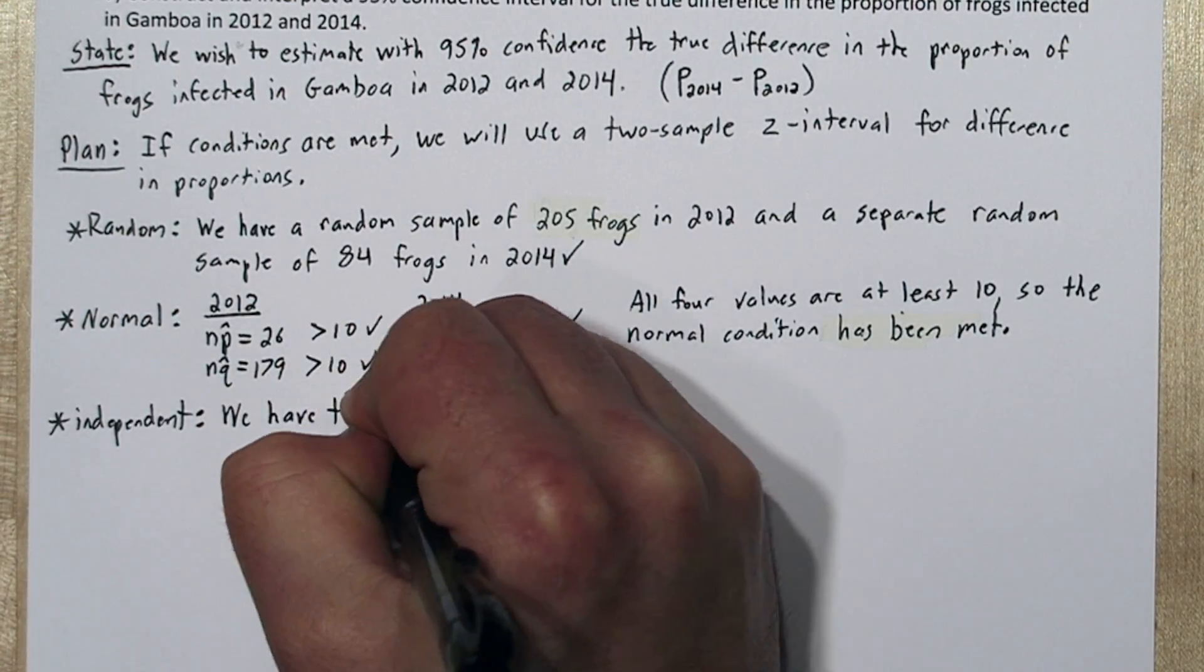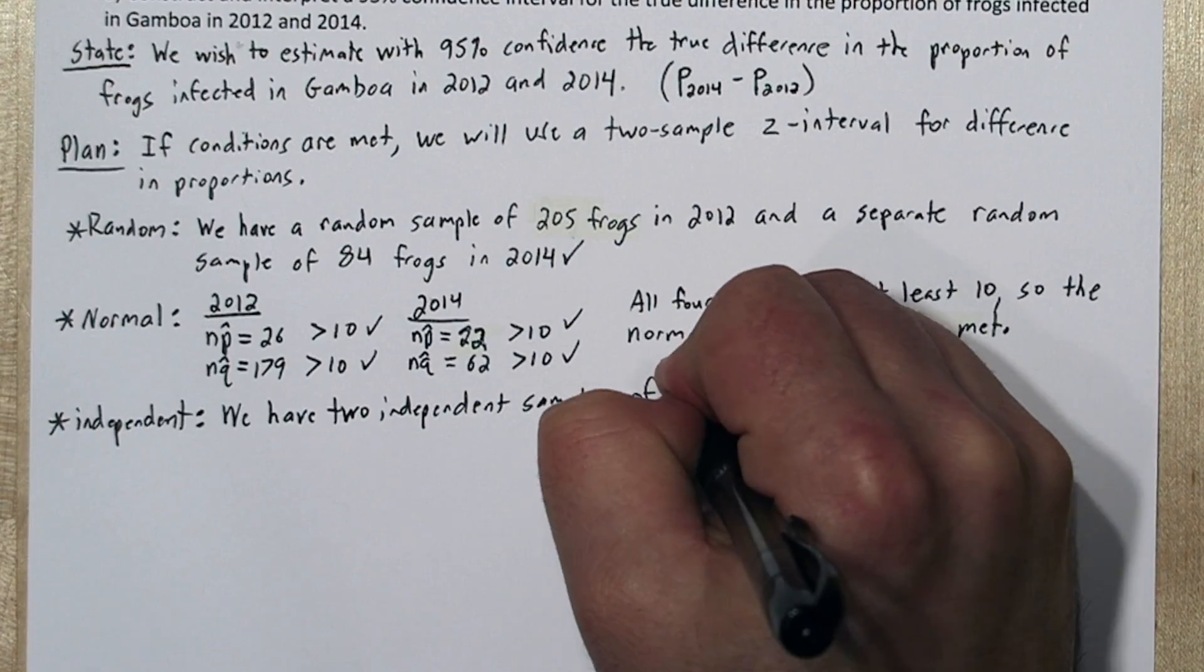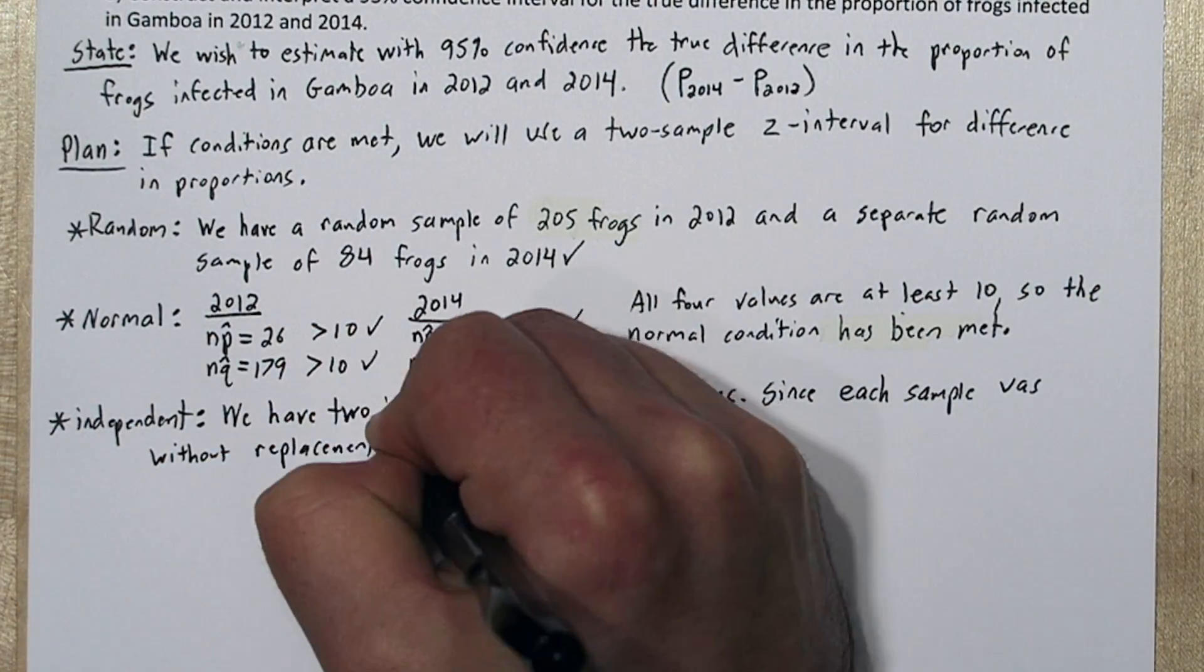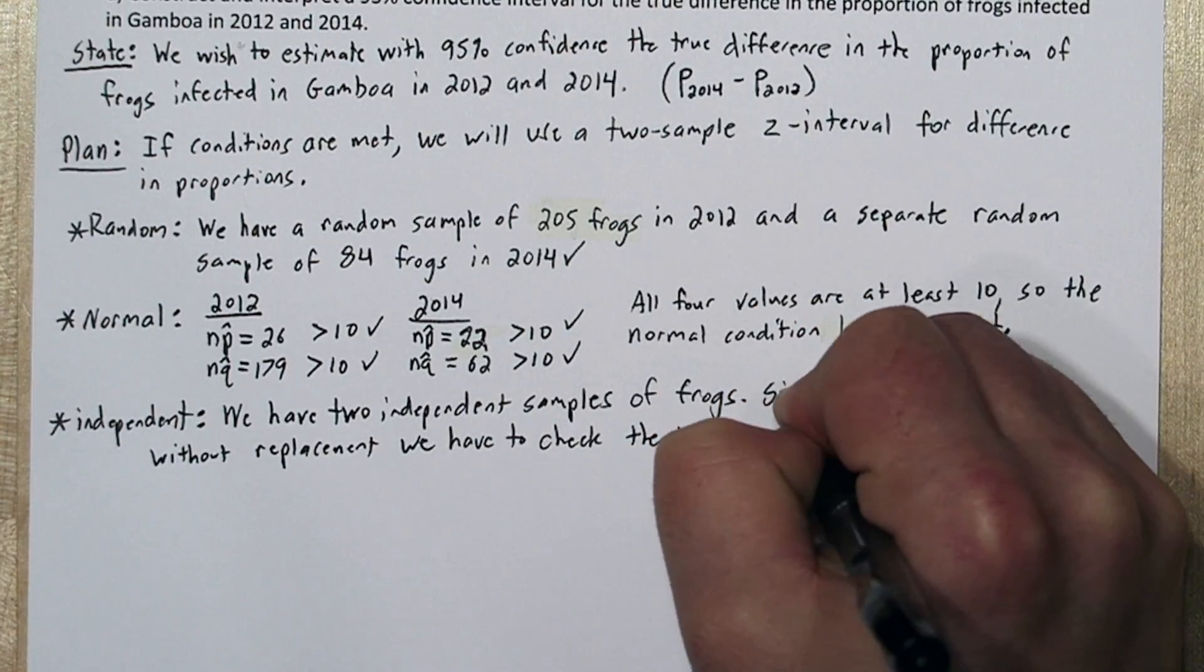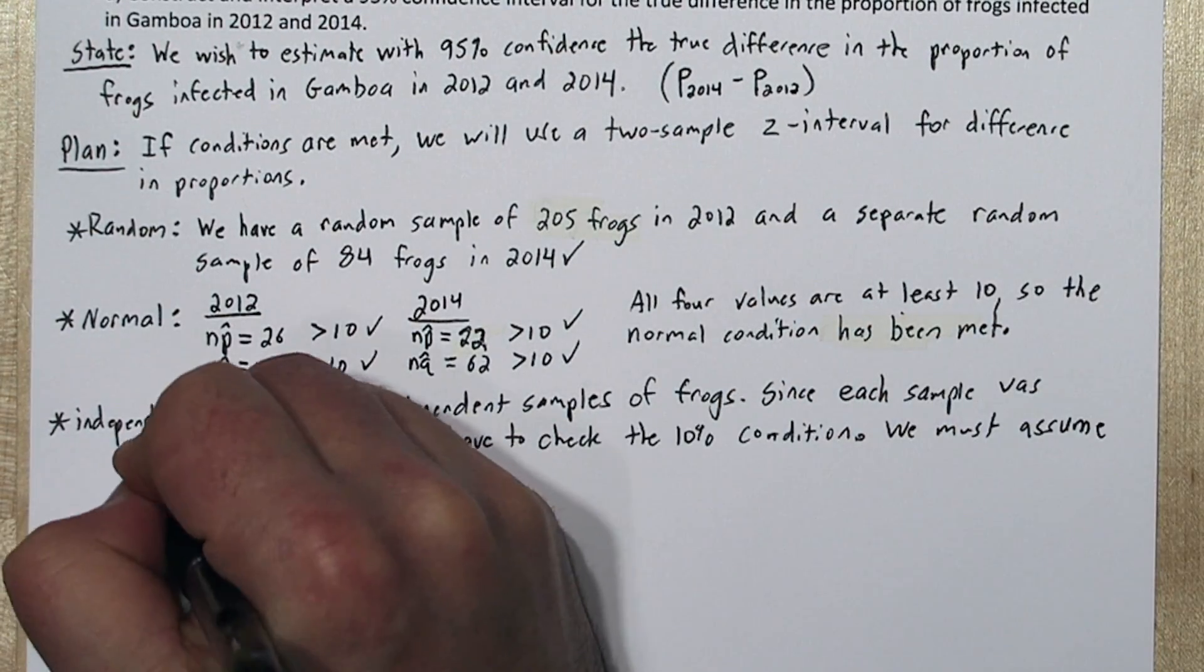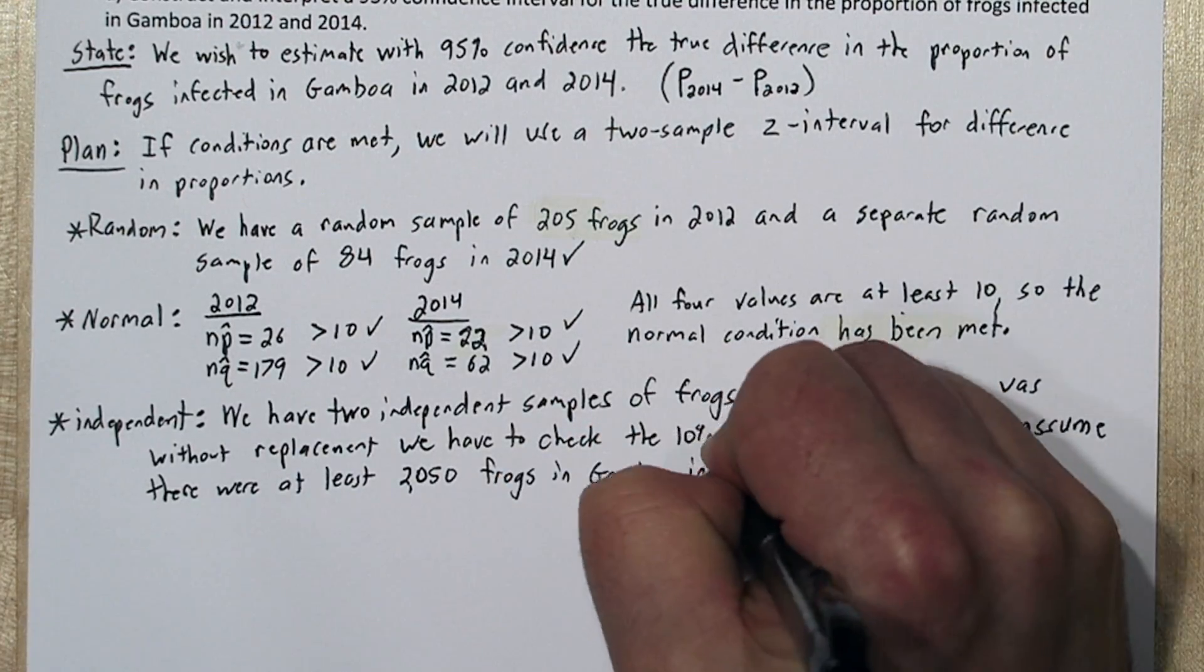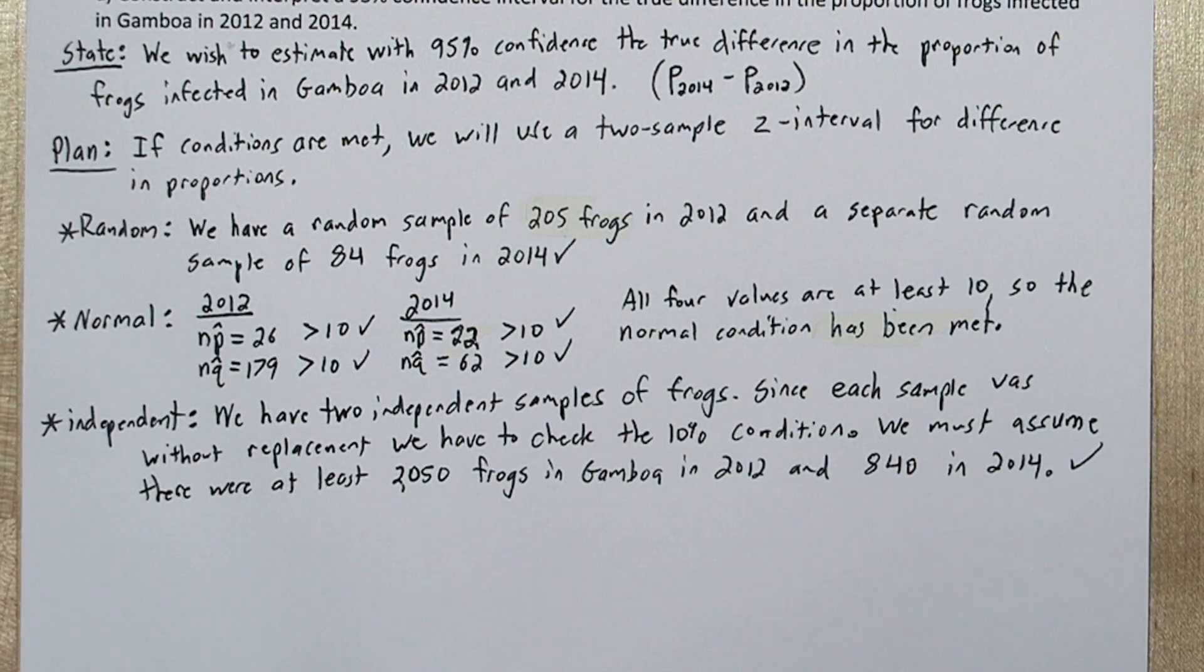For the independent condition, since our samples are two years apart, we can consider them independent. But each sample was sampling without replacement, so we need to check the 10% condition. This means we have to assume there were at least 2,050 frogs in 2012 and 840 frogs in 2014.